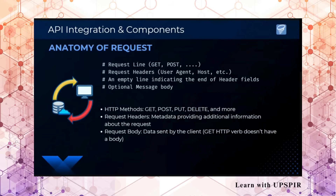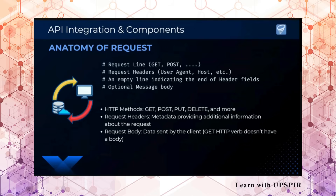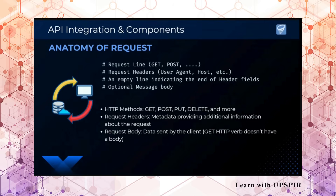Then we have headers — nothing but metadata providing additional information about the request. This metadata will allow the remote server to understand from where the request is coming, what type of request is coming, etc. Then there is the body, in which we send the data. If I am trying to save some information on the other server, I might send some details as a PUT or POST request. Or if I have to retrieve weather, in the case of a weather API, I will be sending the longitude and latitude for the location for which I want the weather.